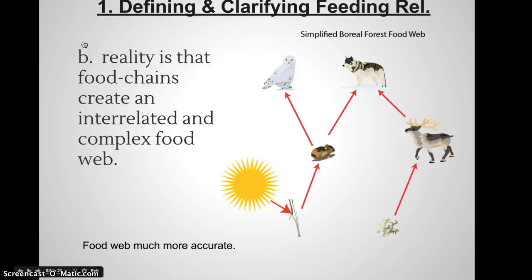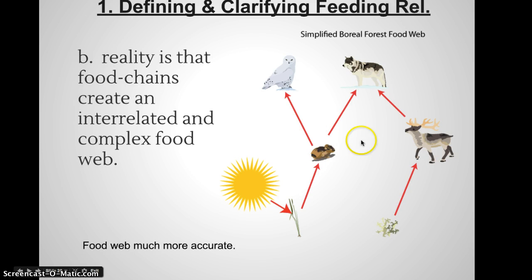There are certain limitations I want you to be able to identify when talking about feeding relationships. The typical food chain, where a lot of that terminology comes from, is a really oversimplified model. A food web is much more accurate because multiple organisms can feed on the first-level consumers. Those that occupy higher trophic levels are going to have bigger impacts — oftentimes, though not always — if they're eliminated from the ecosystem.